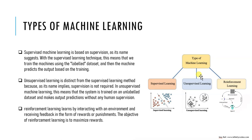The second type is unsupervised learning. In this, the algorithm is given unlabeled data — there is no correct output or classification. The algorithm tries to find patterns and relationships in the data on its own, without any guidance. There is no teacher. It's like a student trying to discover patterns in a dataset without a teacher's help. The algorithm groups similar data points together based on their features or identifies underlying structure.